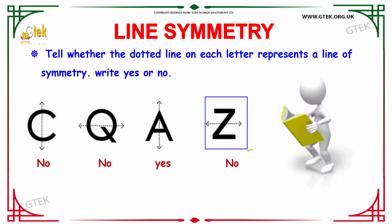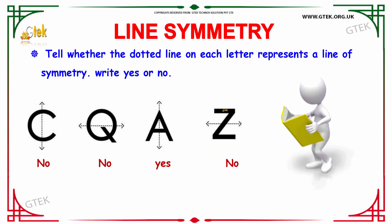Here you have the alphabet Z which has the symmetry line placed as shown. Your answer is no — it is not symmetrical.